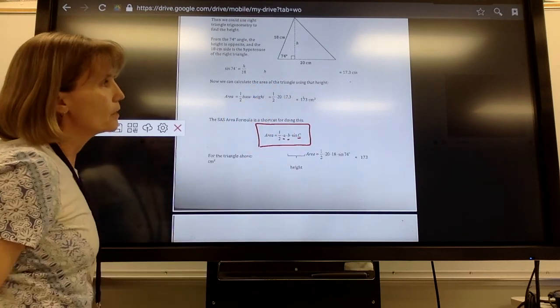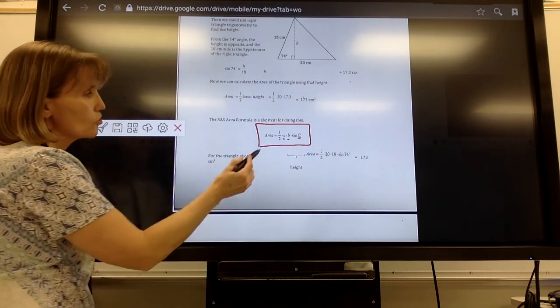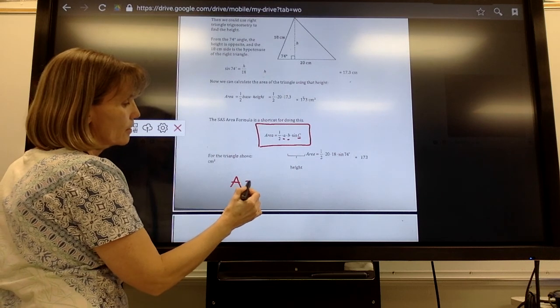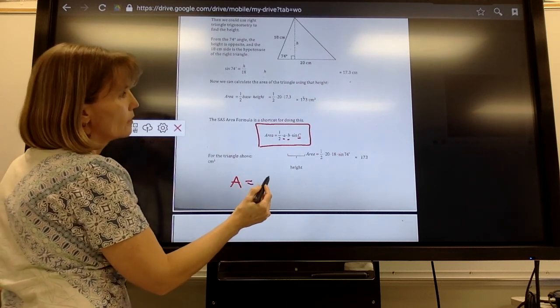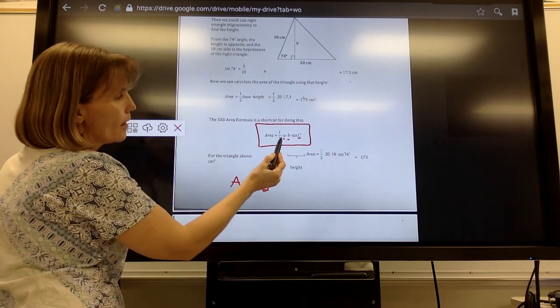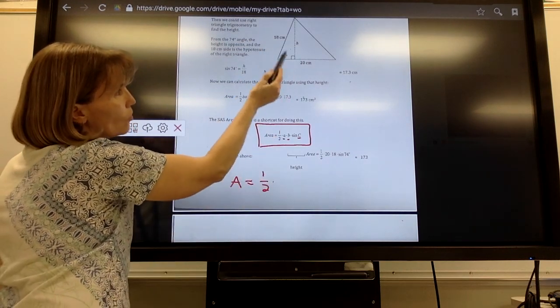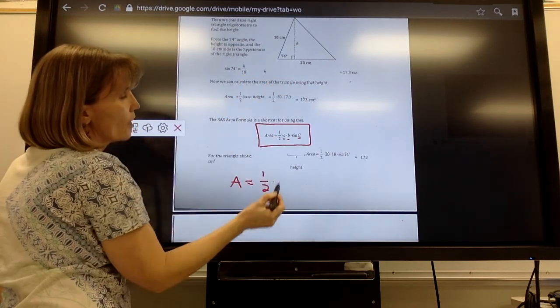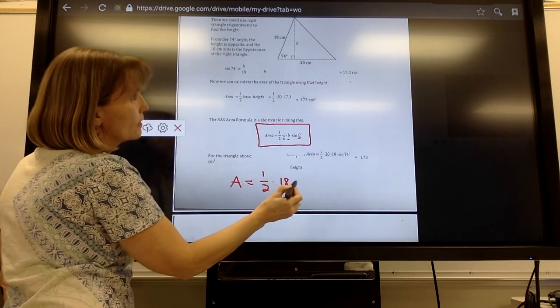So if I go back up here and I use my formula, I would say area equals, it still has the one-half in it, times A and B, your side lengths. They're lowercase letters representing the two sides. So I'd say 18 times 20.